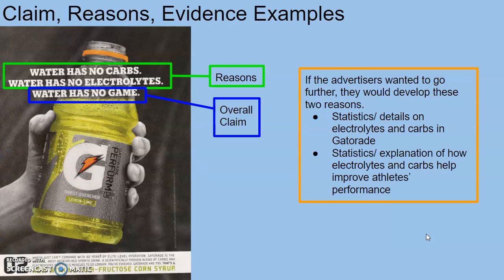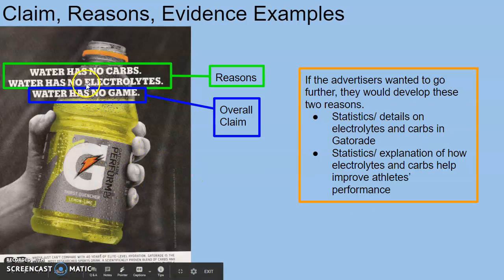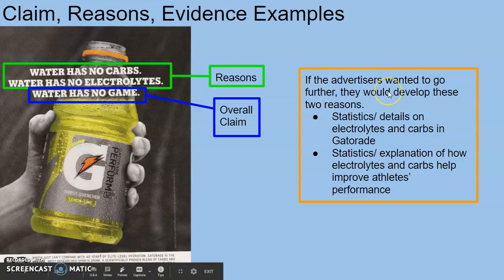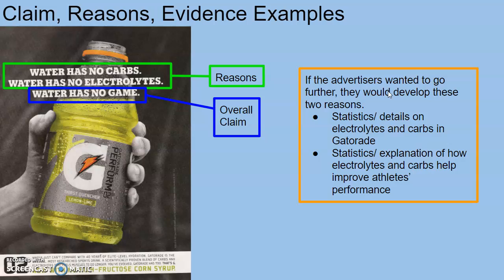We see claims and, to some extent, reasons and evidence all the time in advertising. Here's a Gatorade advertisement. It basically has reasons and a claim all in one. The overall claim is "water has no game" — Gatorade is better than water. The reasons are: water doesn't have carbs and water doesn't have electrolytes. These are all kind of implied. If these advertisers wanted to go further, like writing a whole essay on it, they would need some specific reasons to back up what they're saying.